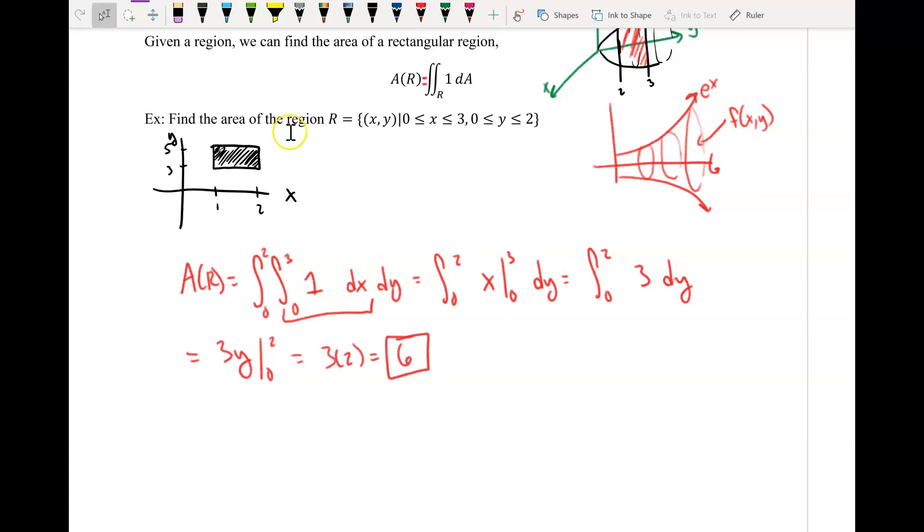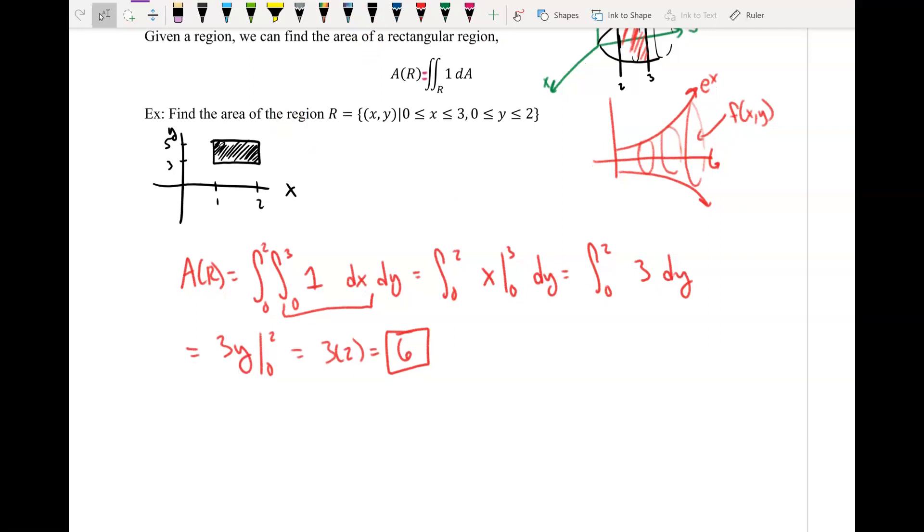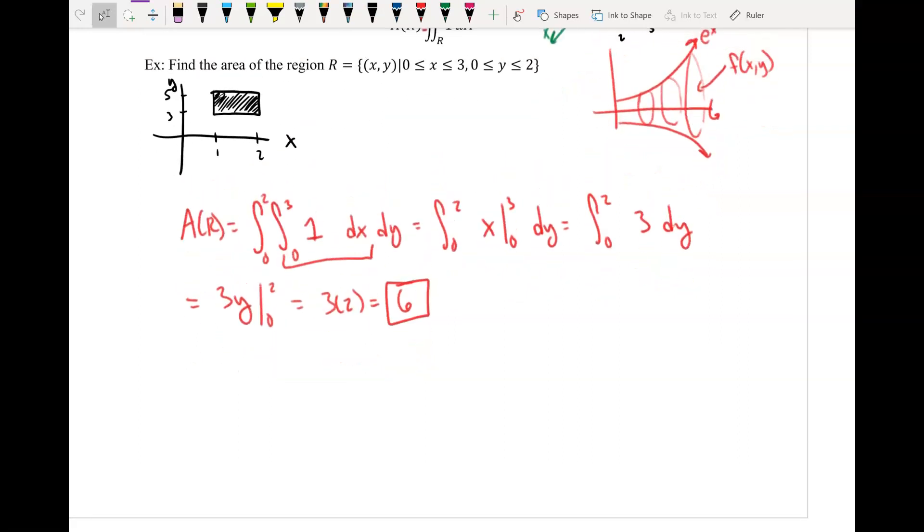And you can see why this is true, right? So if you think about the region itself from 0 to 3 in the x direction, 0 to 2 in the y direction, you can see that this is just a rectangle, right, with a height of 3 and 2, respectively. So if you look at length times width, this will just give me an area of 6.